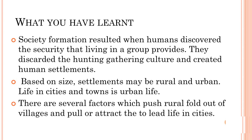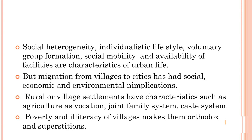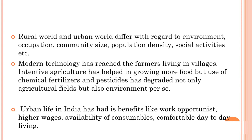Before we wrap up, let us recap the main points. Society formation resulted when humans discovered the security that living in a group provides. They discarded hunting and gathering, and created human settlements. Based on size, settlements may be rural or urban. Life in cities and towns is urban life. There are several factors which push rural folk out of villages and pull them to lead life in cities. Social heterogeneity, individualistic lifestyle, voluntary group formation, social mobility and availability of facilities are characteristics of urban life, but migration from villages to cities has had social, economic and environmental implications. Rural village settlements have characteristics such as agriculture, joint family system and caste system. Rural and urban worlds differ with regards to environment, occupation, community size, population density and social activity.